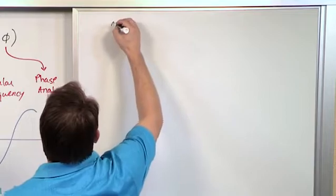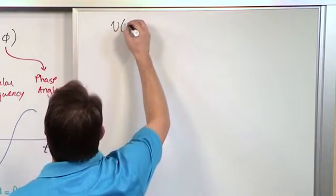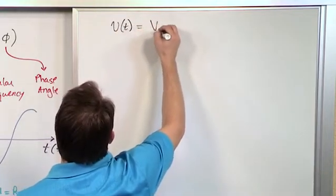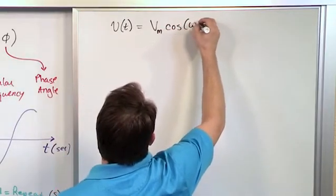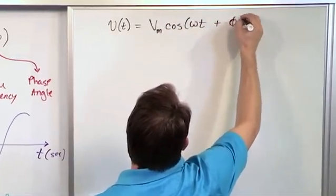Let's go ahead and start by just rewriting what we have so we don't have to flip back and forth to that other board. We have V(t) equals Vm, which is the amplitude, cosine, omega t plus some phase angle phi.